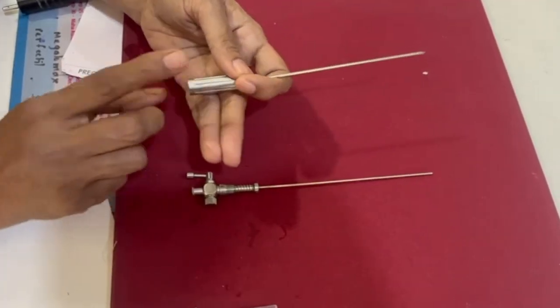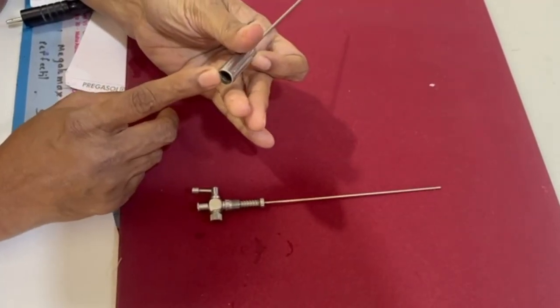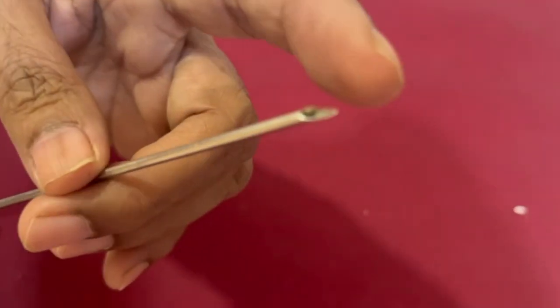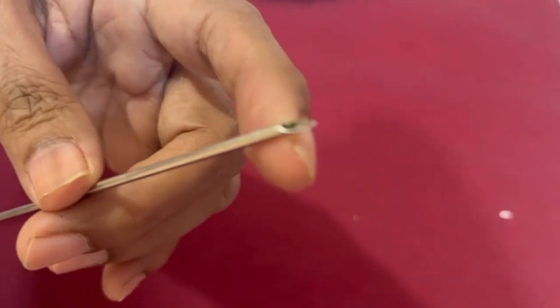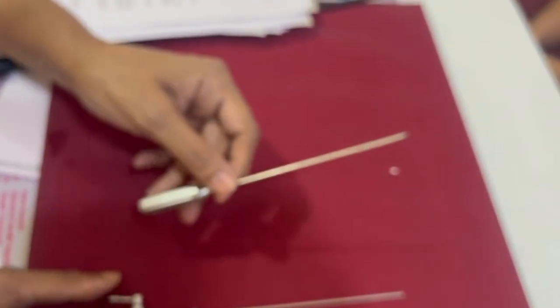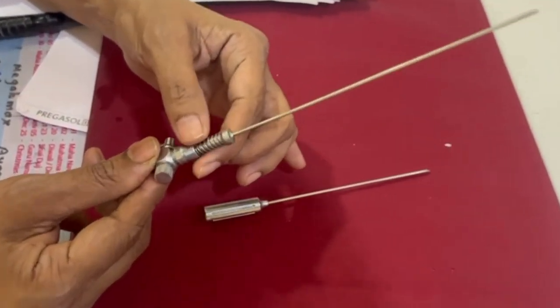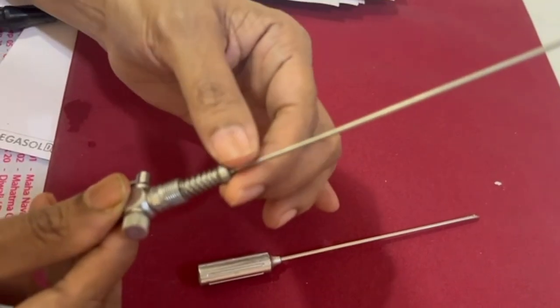The outer one is hollow and the tip has a sharp beveled edge. You can see this sharp beveled edge. This is the outer hollow needle.